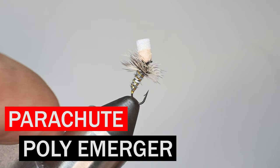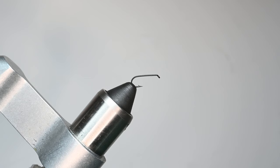What is up everybody? Sven Diesel here. We're going to be tying up a parachute emerger. I'm adding poly in there because we're using a new material by Semperfly called floating poly yarn. Let's go ahead and get started.